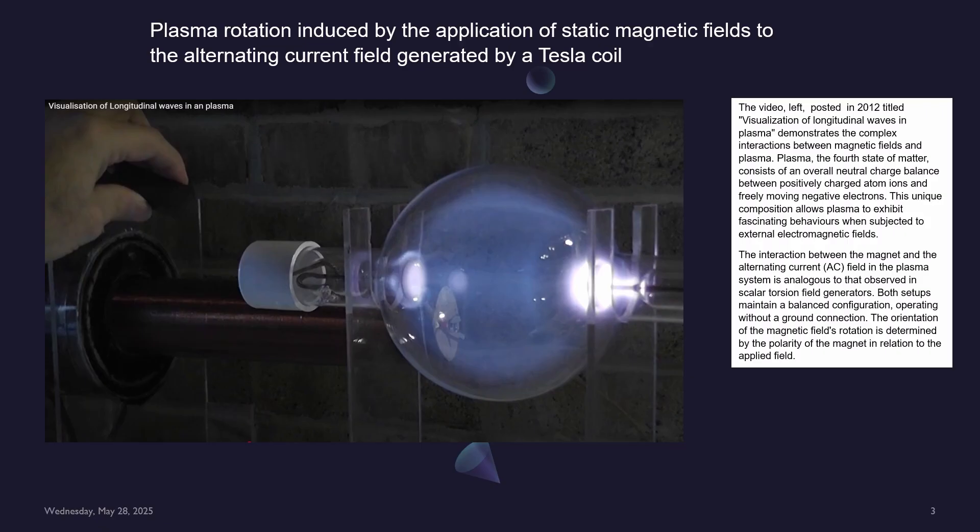This unique composition allows plasma to exhibit fascinating behaviors when subjected to external electromagnetic fields. The interaction between the magnet and alternating current AC field in the plasma system is analogous to that observed in scalar torsion field generators. Both setups maintain a balanced configuration operating without a ground connection.